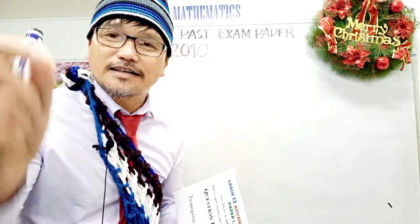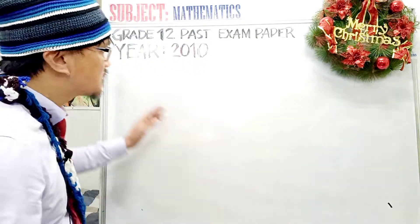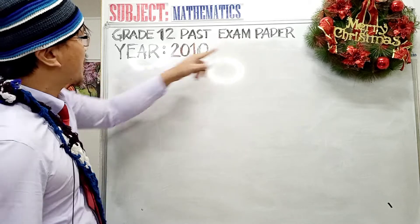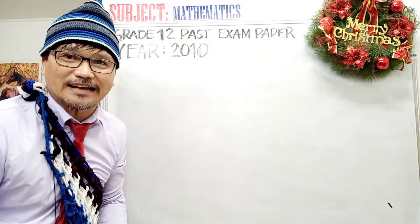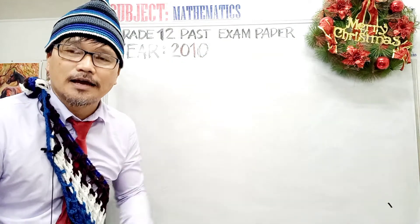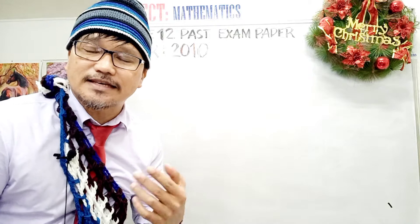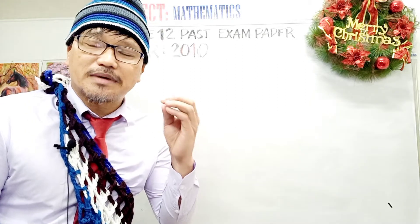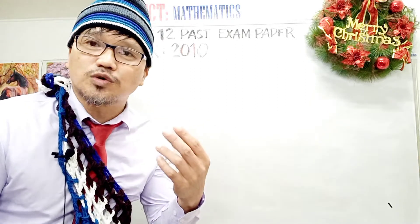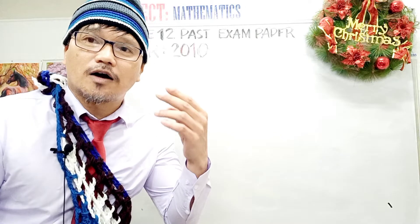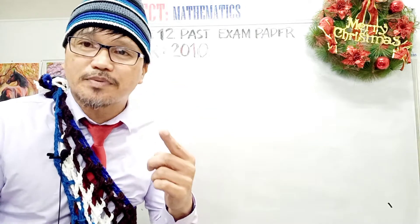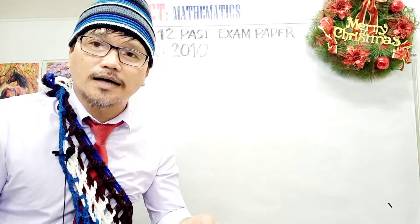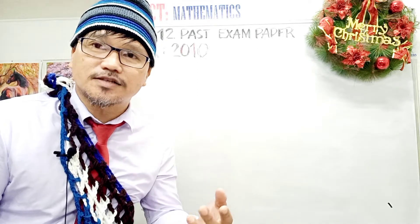We are using the grade 12 past exam paper from year 2010 — the grade 12 advanced mathematics exam paper. Mathematics has two parts, or two papers: paper 1 and paper 2. Paper 1 consists of three parts.